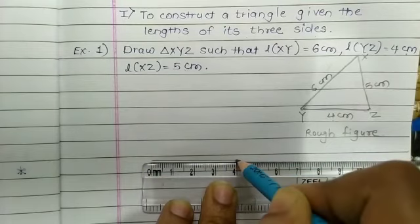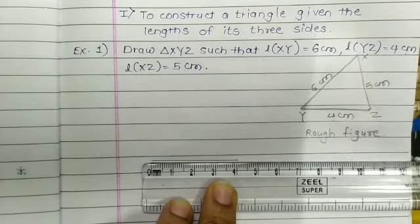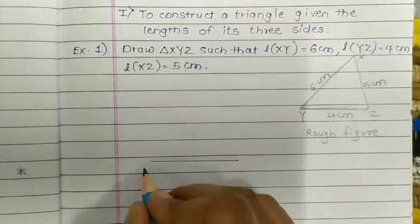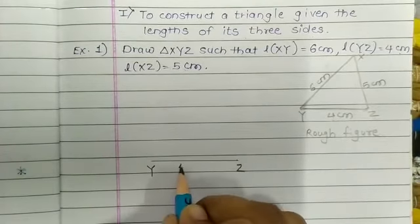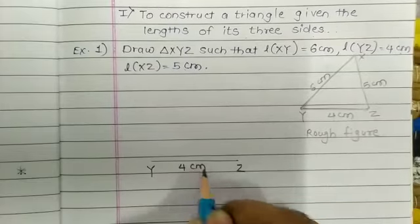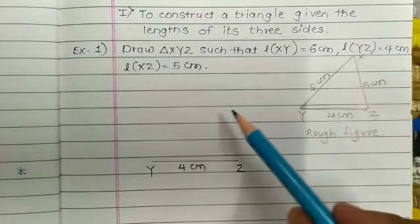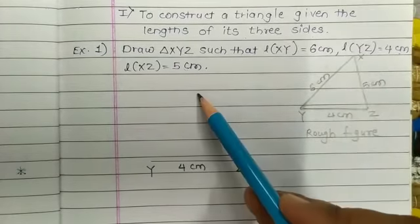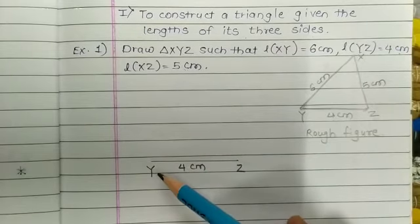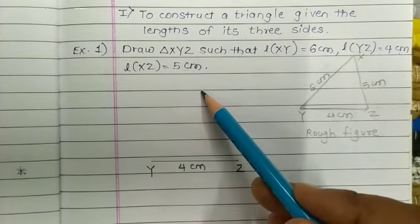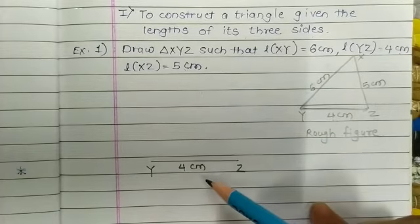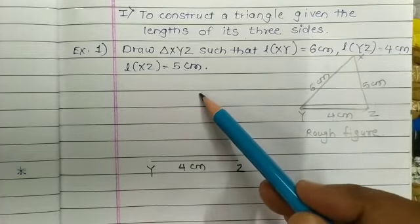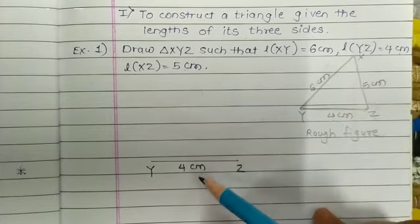Now we start. Take a ruler and draw the line YZ with measurement 4 cm. Point X needs to be decided such that Y is 6 cm distance and Z is 5 cm distance. So we need to locate point X using compass.